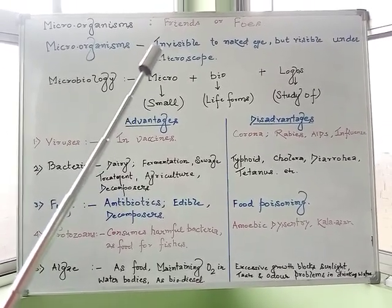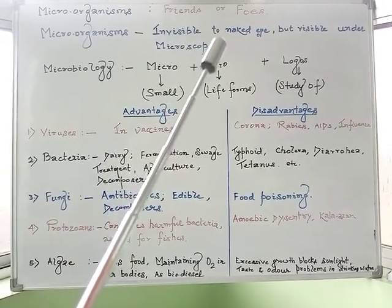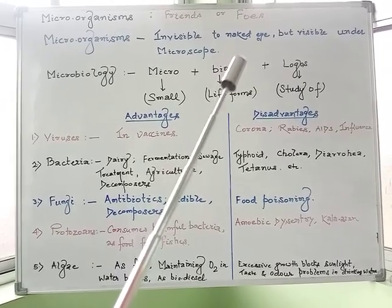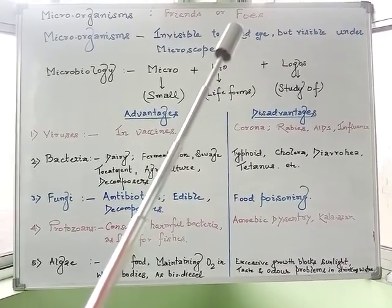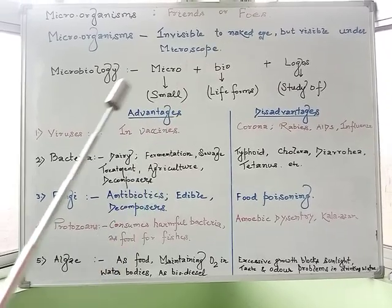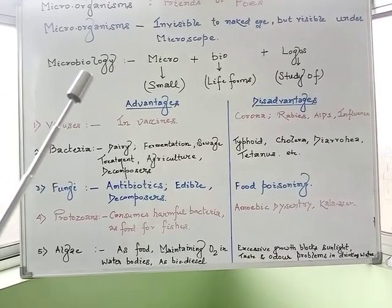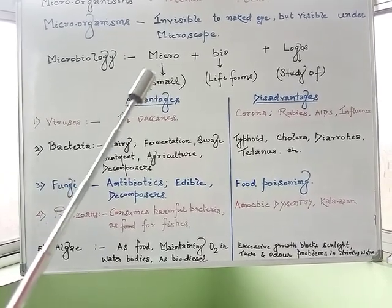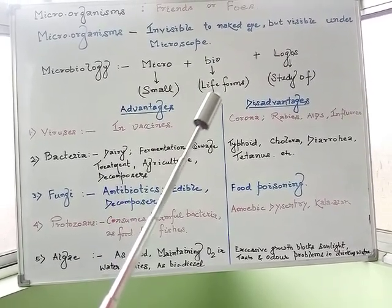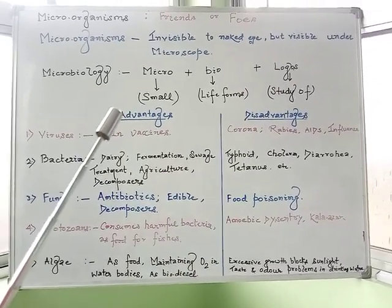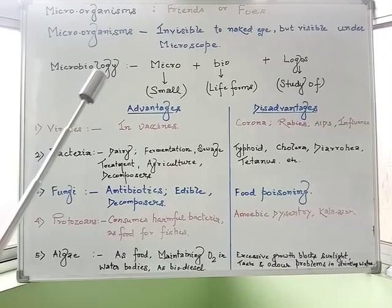Microorganisms act as our friends, and some groups act as our foes — meaning they behave like enemies and create adverse impact upon different types of life forms. The study of Microorganisms is known as Microbiology. It is made up of three words: Micro plus Bio plus Logos — where Micro means small, Bio means life forms, and Logos means study of. So, Microbiology is a distinct branch within biology.